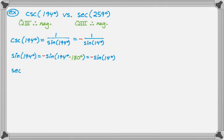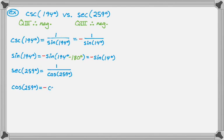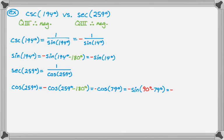For secant of 259: 1 over cosine of 259. Cosine of 259 is negative in the third quadrant, giving negative cosine of 259 minus 180, which is negative cosine of 79. Converting to sine: negative sine of 90 minus 79 equals negative sine of 11. So secant of 259 equals negative 1 over sine of 11.